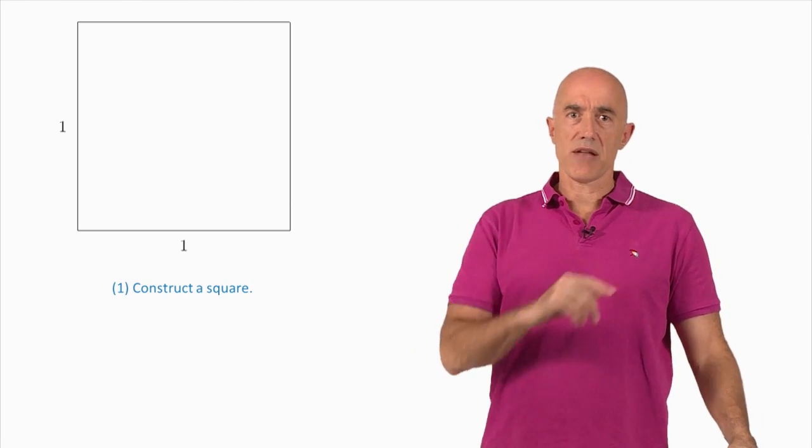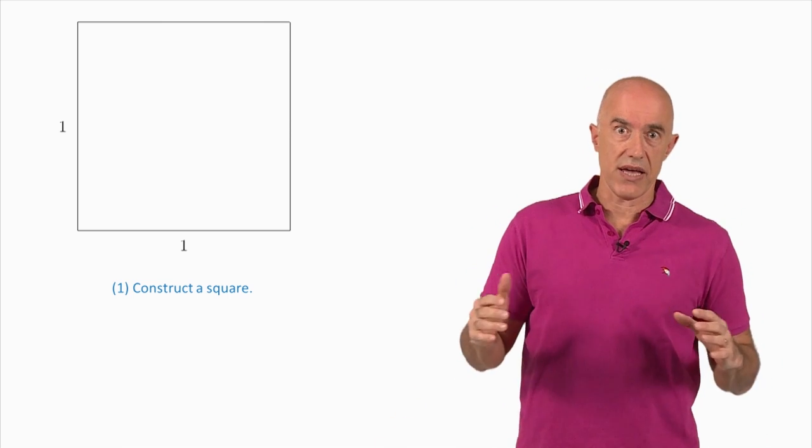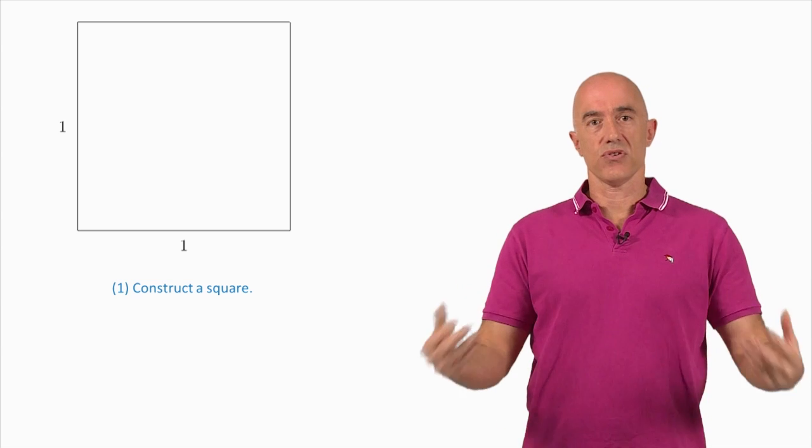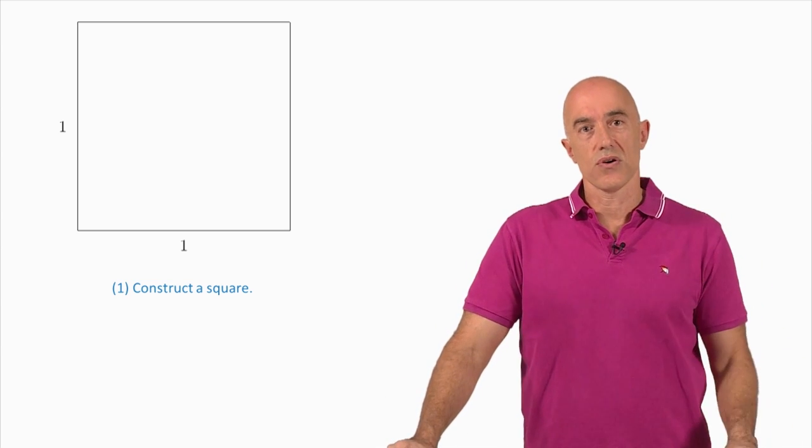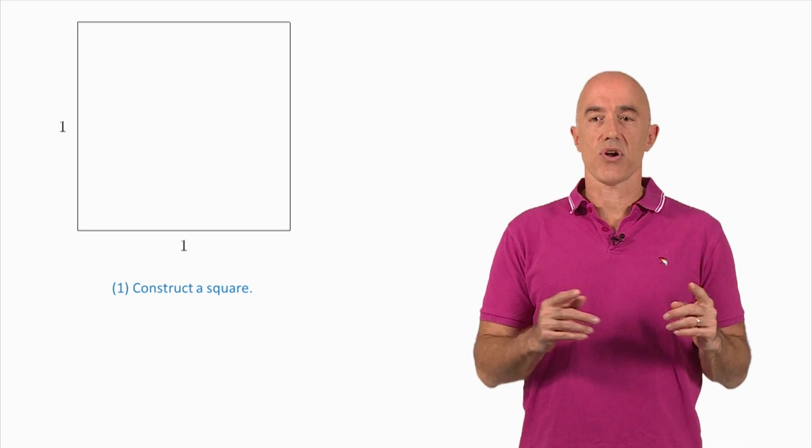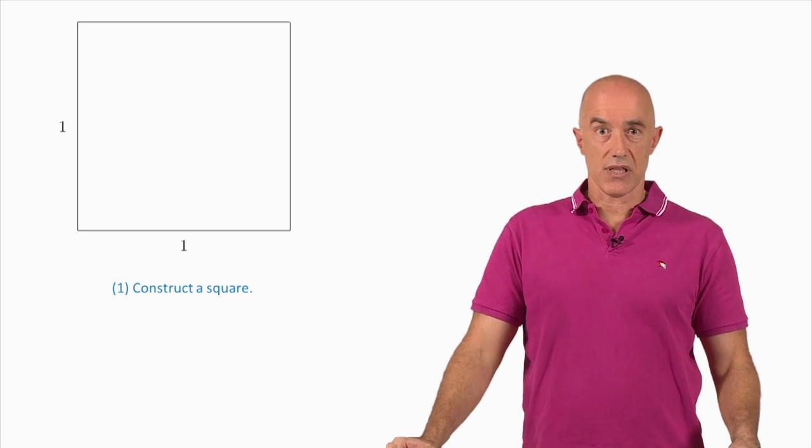We start by constructing a square. So by classical construction, using a straight edge and a compass, you can construct a square. So I won't go into that here because our goal is really the golden rectangle. So you start by constructing a square. We just call the sides of unit length.